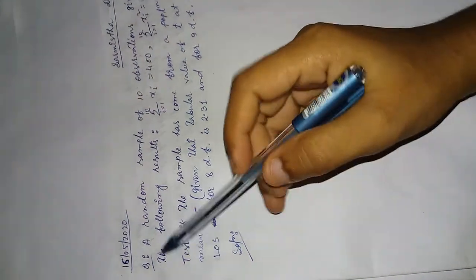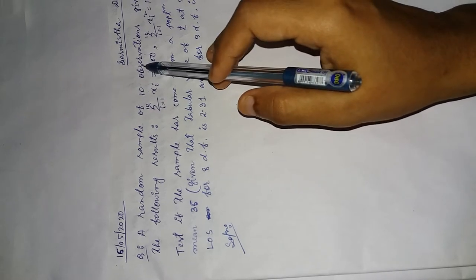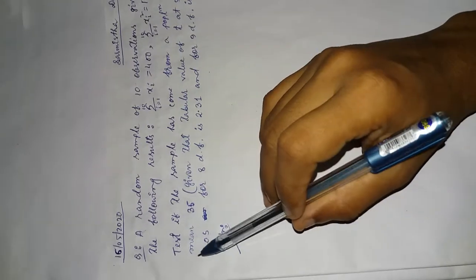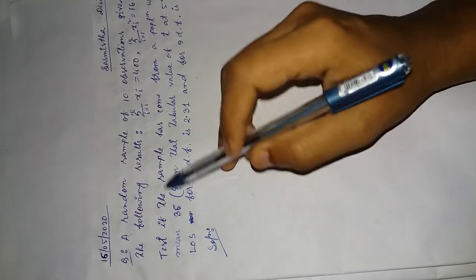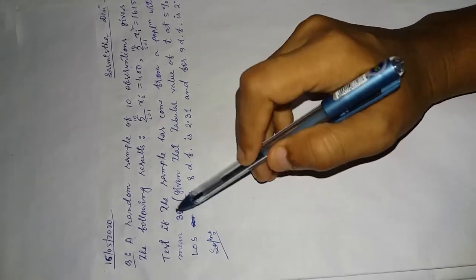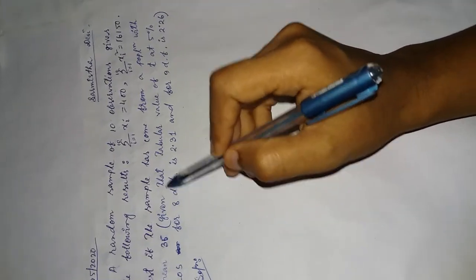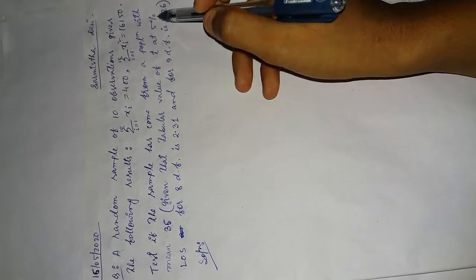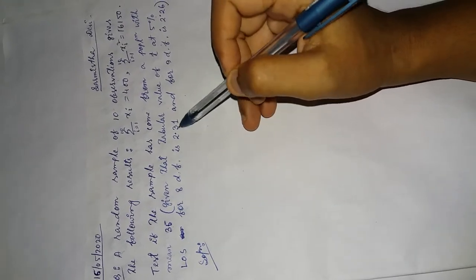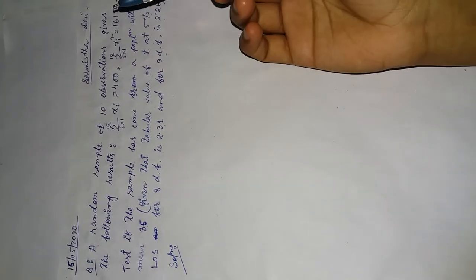Dear students, welcome to today's class. Check the first question please. A random sample of ten observations gives the following results. Test if the sample has come from a population with mean 35. You are given that tabular value of t at 5 percent level of significance for eight degrees of freedom is 2.31 and for nine degrees of freedom is 2.26. Mind it, the value of n is 10, so what will be the degrees of freedom? It will be...